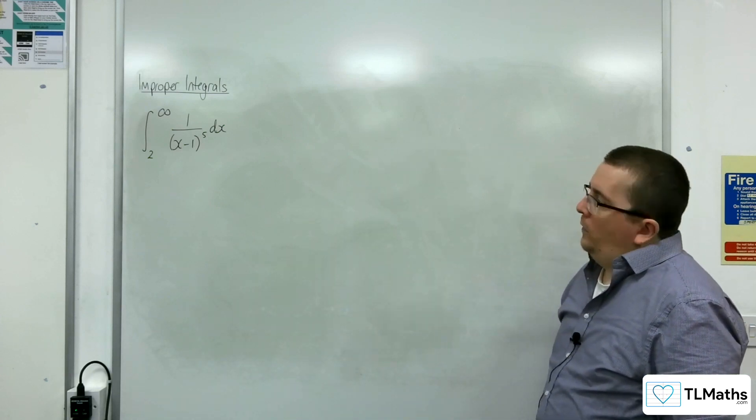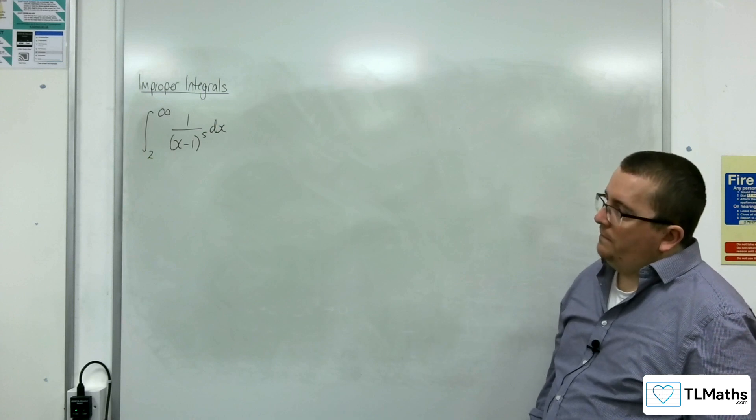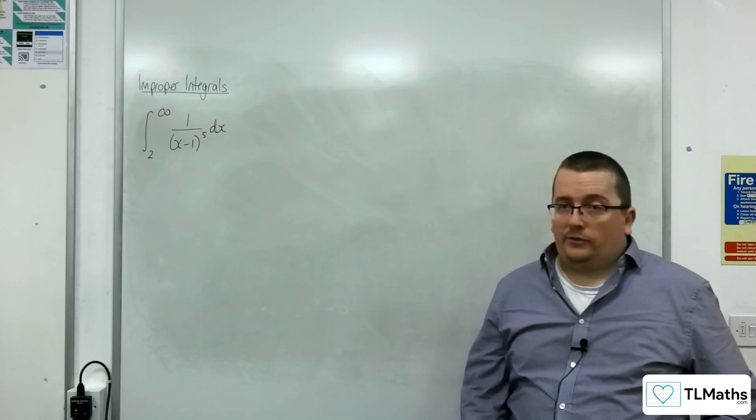So let's look at this improper integral where we are integrating from 2 to infinity, 1 over (x minus 1) to the power of 5 dx.